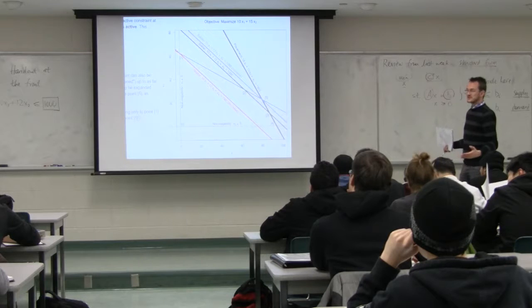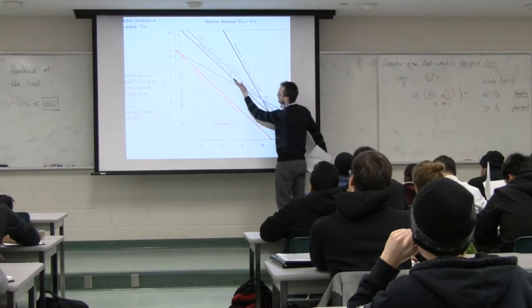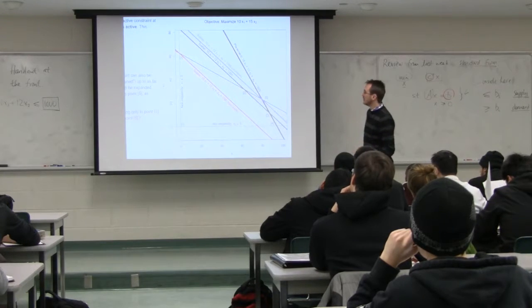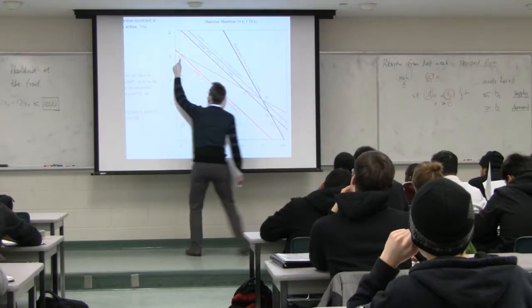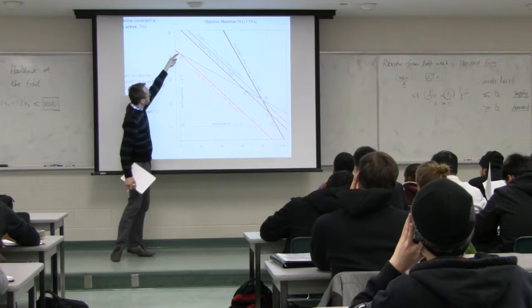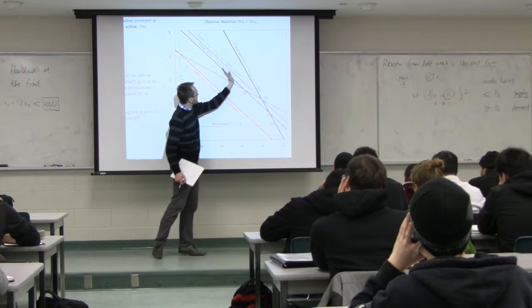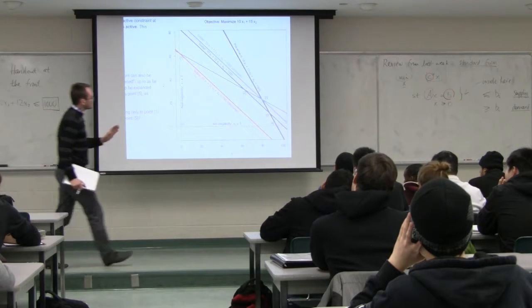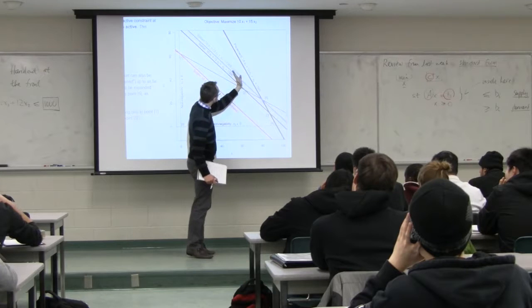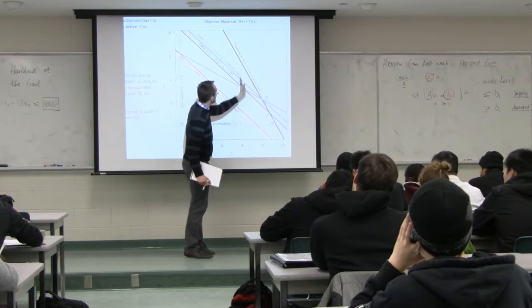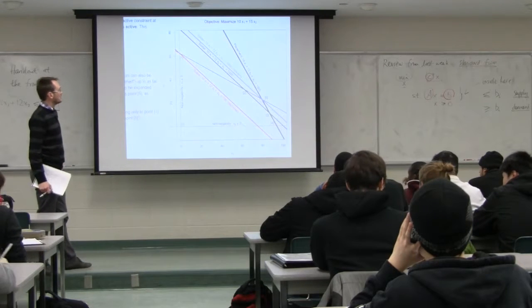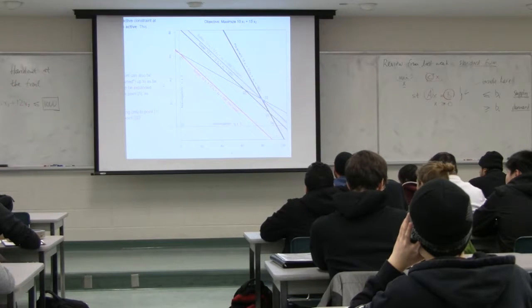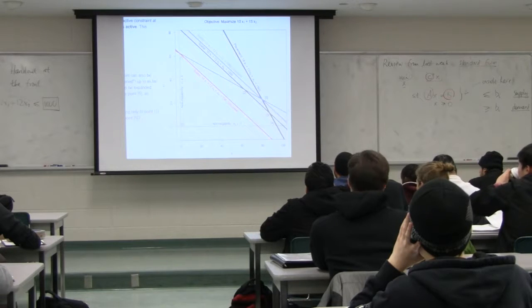We went from a thousand minutes down to 750 minutes — you can decrease further, but then your whole problem changes. In particular that constraint will become active. So anything between moving it from the red line to the black line maintains the same set of active constraints. Similarly in the increase case, we could increase from a thousand to at most a thousand and sixty-eight minutes. Once we go beyond that, a different set of constraints becomes active and we would have to re-solve the problem.